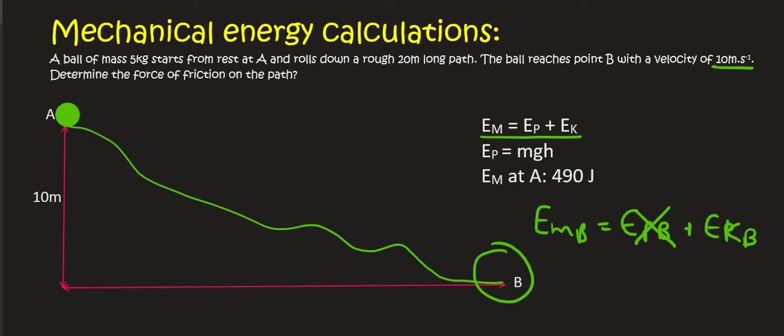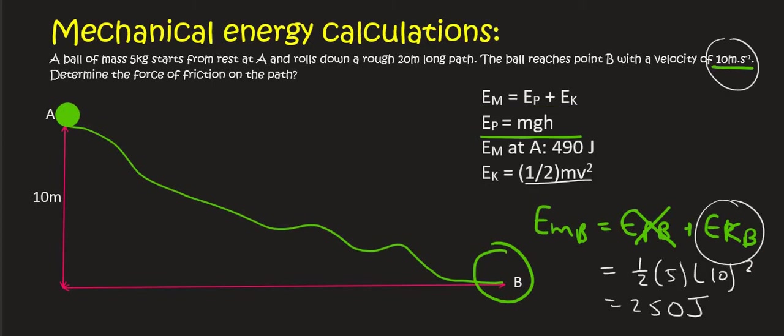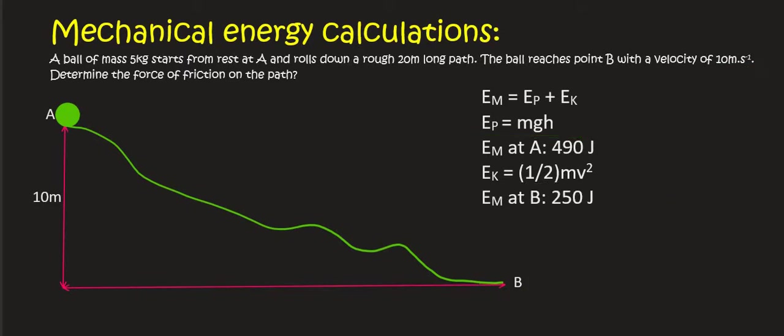We know that kinetic energy is equal to the following and that's going to give us 250 joules. And so check how cool that is. If there was no friction the mechanical energy at B would be 490. But because of friction we only have 250 joules.